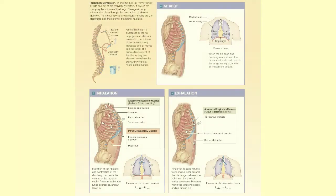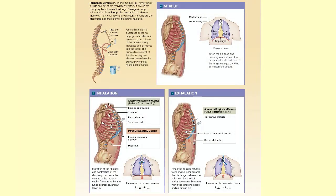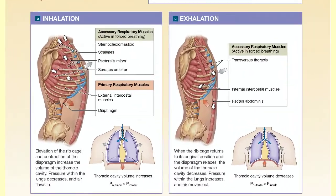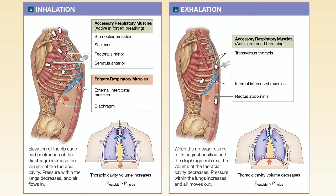Pulmonary ventilation occurs because gases move from areas of higher pressure to areas of lower pressure. When we inhale, the pressure inside our lungs decreases.